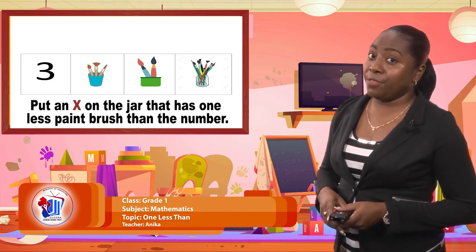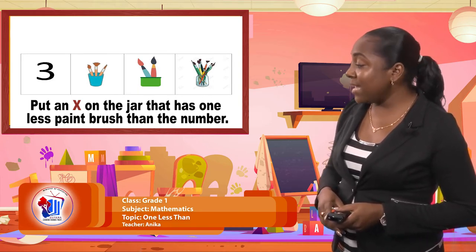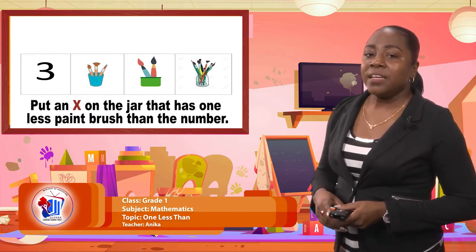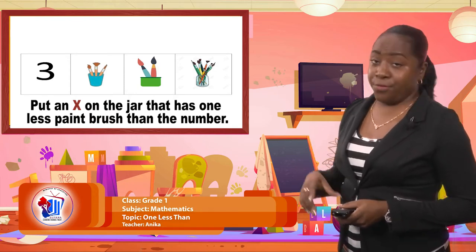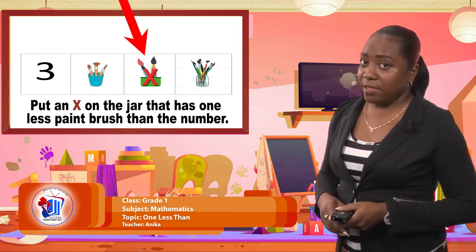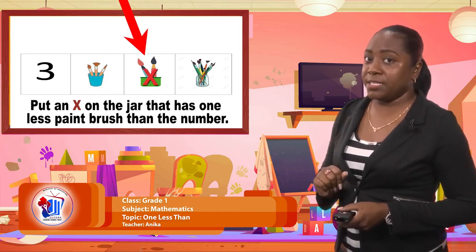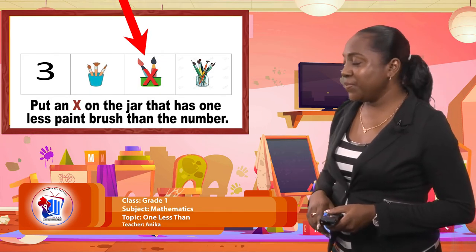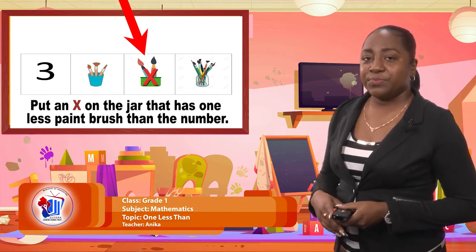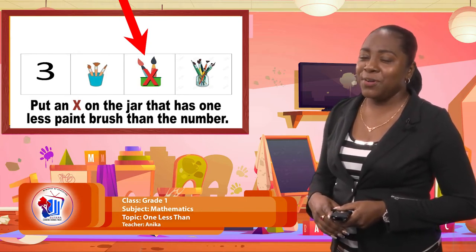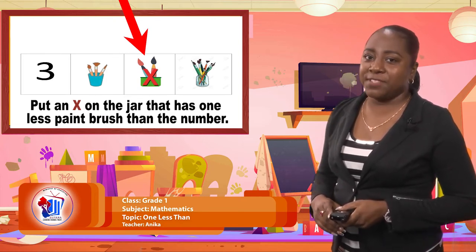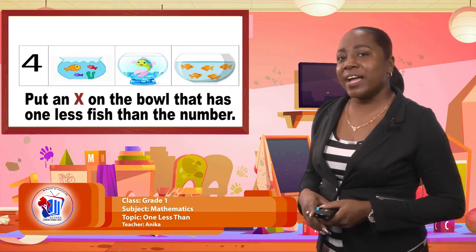If I take away one from three, what would I be left with? Let's check the answer. So since the number is three, one less than three would be two. So the jar in the middle, which is the green jar with the two paint brushes, would be the answer. One less than three is two. Got that correct? I hope so. This is very easy but in order for you to get it correct you really have to think. Let's look at another one.